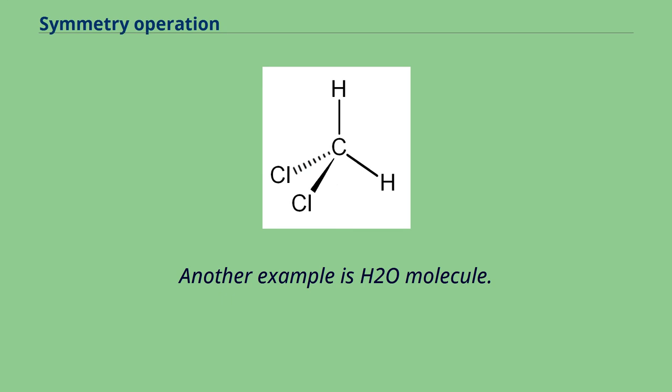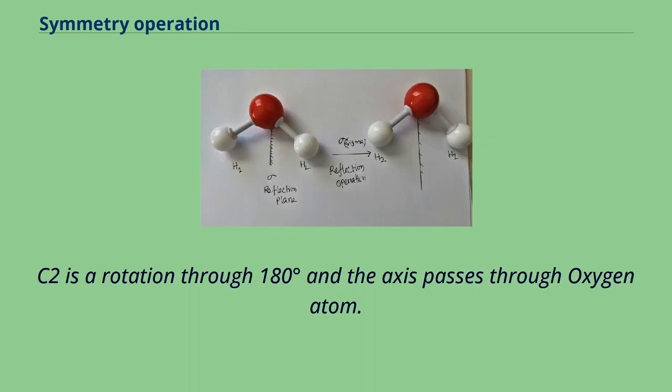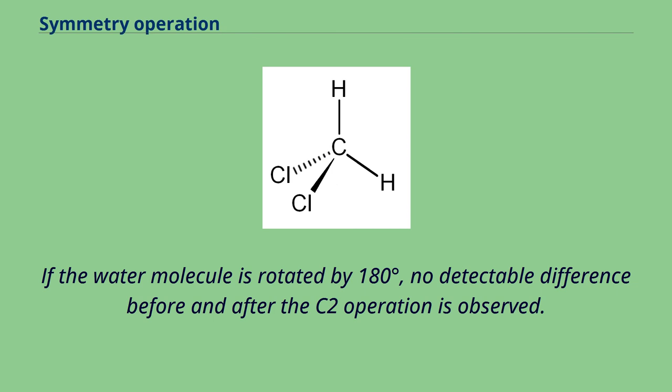Another example is H2O molecule. It has C2 axis of rotation. C2 is a rotation through 180 degrees and the axis passes through oxygen atom. If the water molecule is rotated by 180 degrees, no detectable difference before and after the C2 operation is observed.